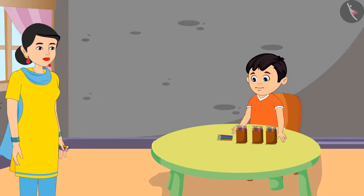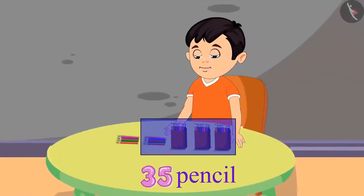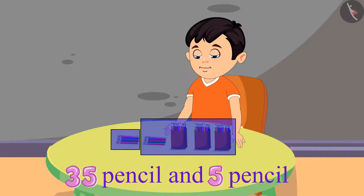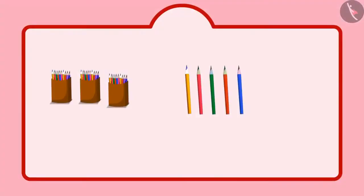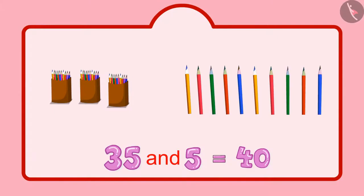After some time, Chotu's mother found some more of his pencils. Chotu, I have got 5 more of your pencils. Keep these together as well. Okay, mummy. I had 35 pencils and now 5 pencils more, and that means 5 units more. After 35: 36, 37, 38, 39, 40.